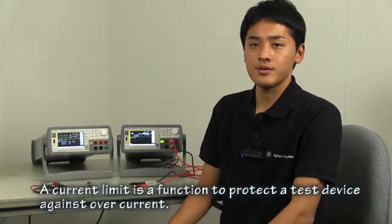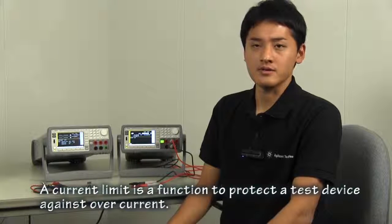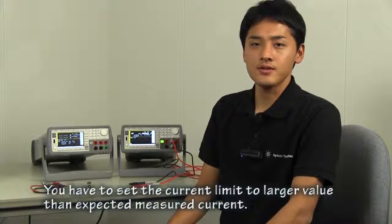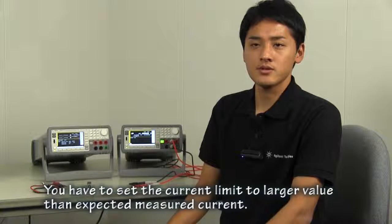In addition, you have to care about current limit to use the SMU as an ammeter. A current limit is a function to protect a test device against overcurrent. In this case, you have to set a larger value than expected measured value.